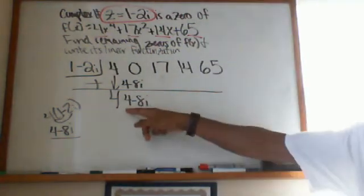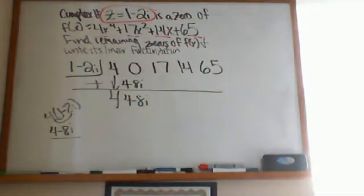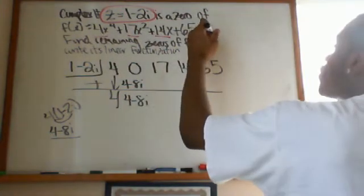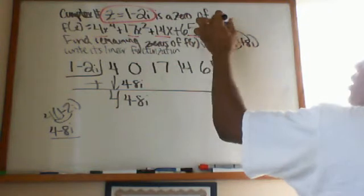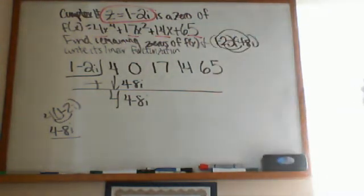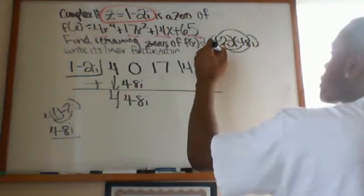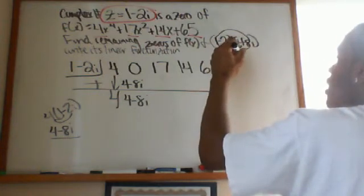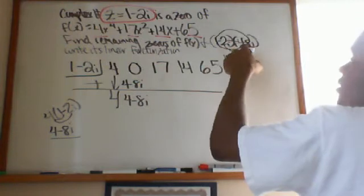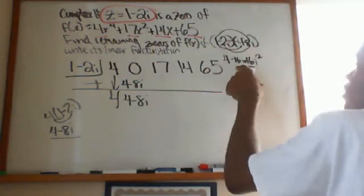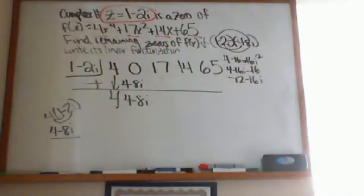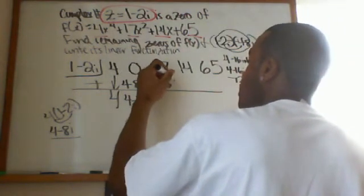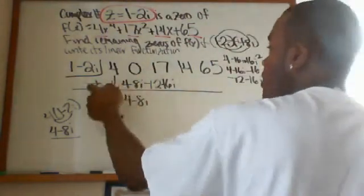Now I multiply (4 minus 8i) times (1 minus 2i) using FOIL. First: 4. Outside: minus 8i. Inside: minus 8i. Last: 16i squared, but i² equals negative 1, so that becomes minus 16. Combining: 4 minus 16i minus 16 equals negative 12 minus 16i. That goes in the next column, and I add: 17 plus (negative 12) equals 5 minus 16i.